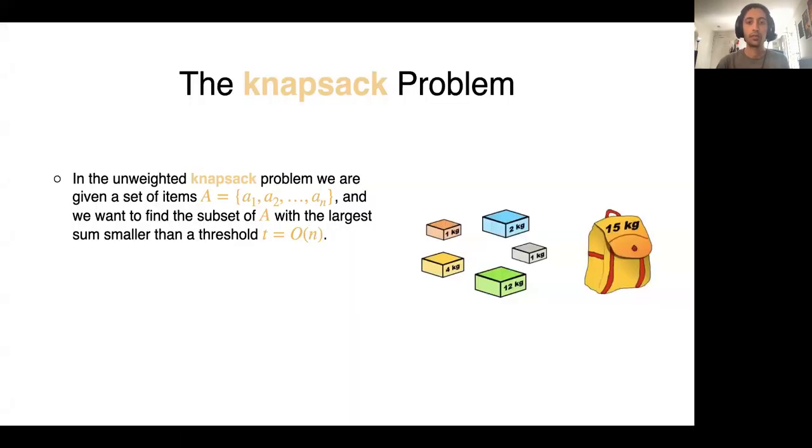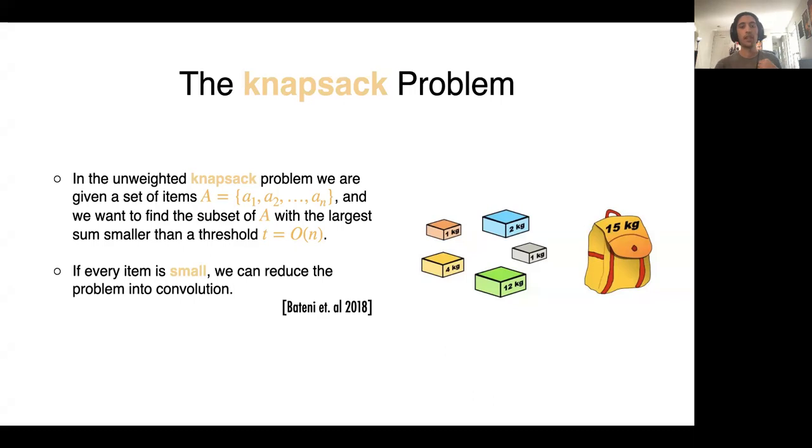One of the applications of constant round FFT and subsequently constant round convolution is the knapsack problem. In the knapsack problem, or more specifically unweighted knapsack problem, we are given a set of items A. We want to find a subset of these items with the largest sum that is smaller than a threshold T, which is O(n).